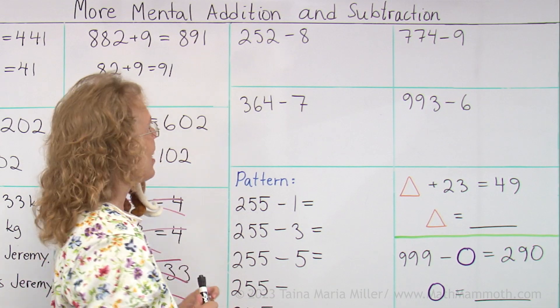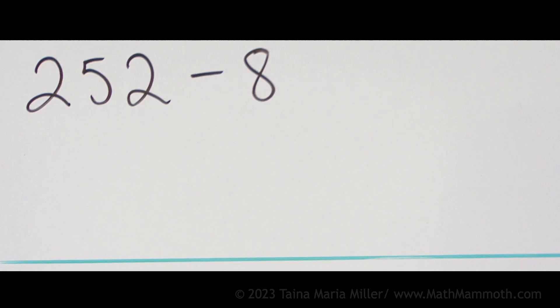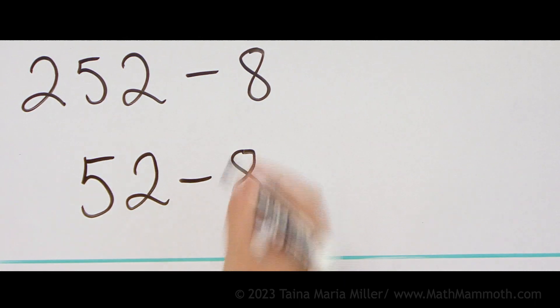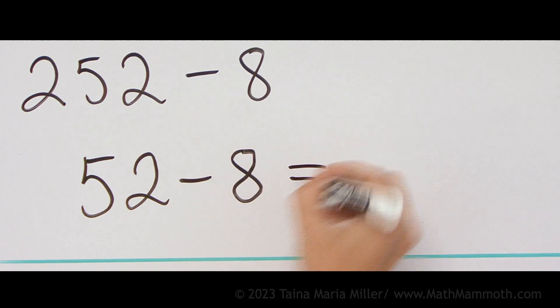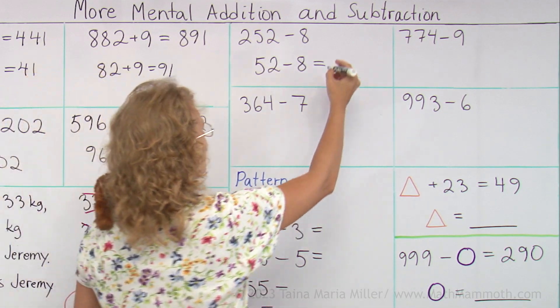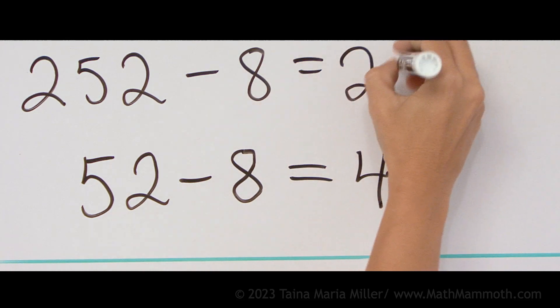Over here we're going to subtract 252 minus 8. Okay, again your helping problem is this 52 minus 8, which you can solve in different ways. As far as mentally, you could think of 52 minus 2 minus 6, so we get 44. And so this one of course is then 244.